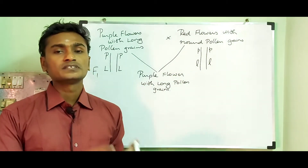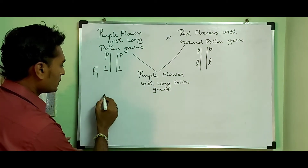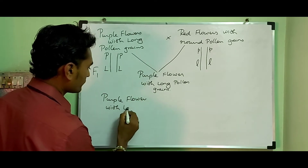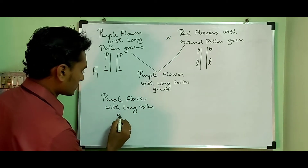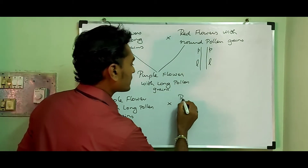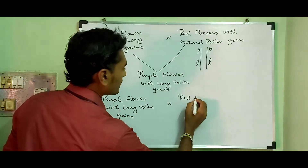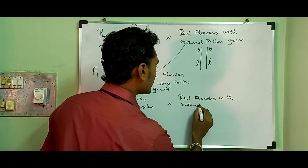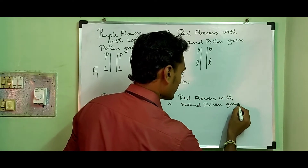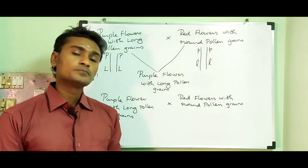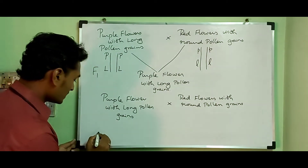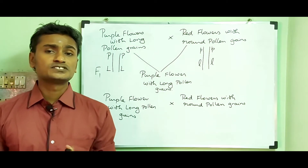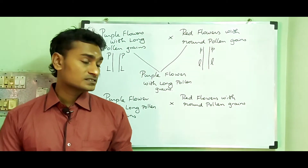They then made a test cross between the F1 generation — purple flower with long pollen grain — and the double recessive parent — red flower with round pollen grain. Gametes fused to produce the F2 generation. The expected phenotypic ratio for a dihybrid test cross was 1:1:1:1.